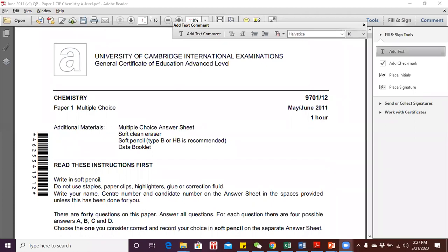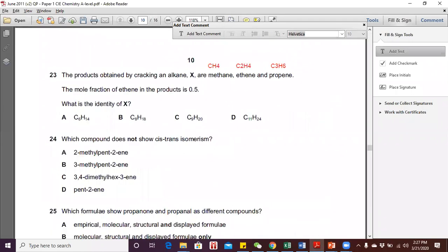Let's jump straight to question 23 at page 10. The products obtained by cracking an alkane X are methane CH4, ethane C2H4, and propane C3H6. The mole fraction of ethane in the product is 0.5. What is the identity of X?